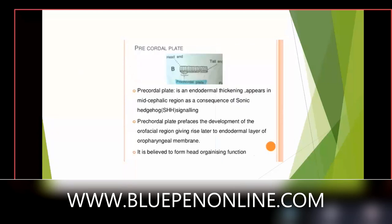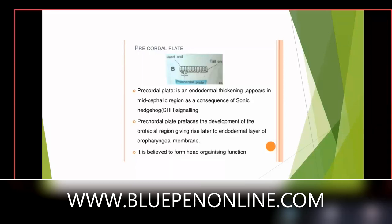Before the notochord is formed, there is something called the pre-chordal plate. The pre-chordal plate is an endodermal thickening that appears in the mid-cephalic region as a consequence of sonic hedgehog signaling. This is why developing embryos are detectable under ultrasonic scanning — these cells have some signaling response to ultrasonic waves. The pre-chordal plate prefigures the development of the orofacial region, giving rise to endodermal layers of the oropharyngeal membrane.